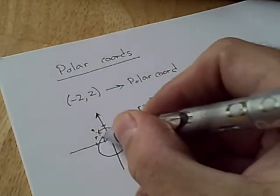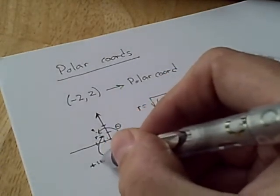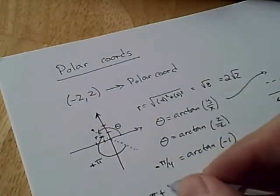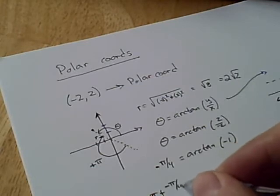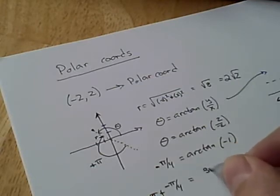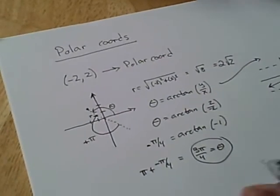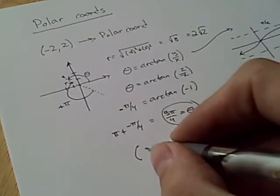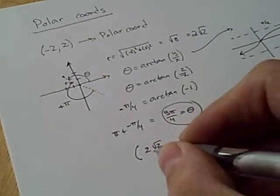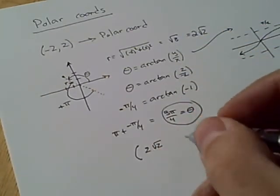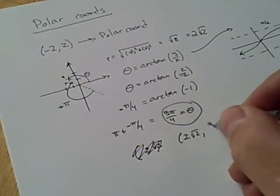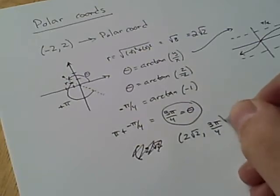Rather, what we have to do is know to add on pi radians to get our angle. So if you add pi radians to minus pi over 4, you'll get 3 pi over 4, and that's our theta. So altogether, finally, our point is 2 times root 2, and our angle is 3 pi over 4.